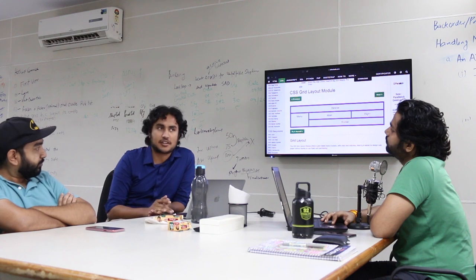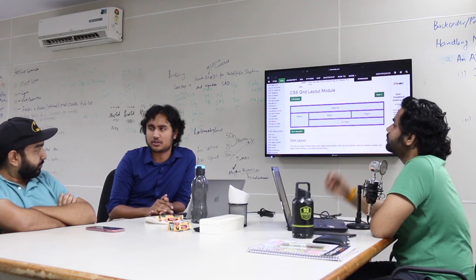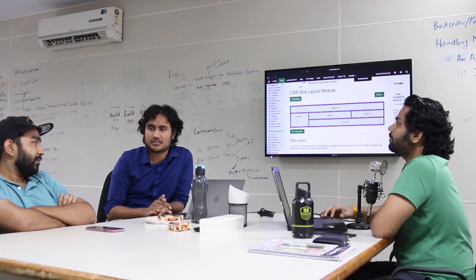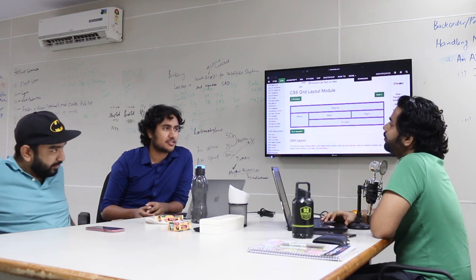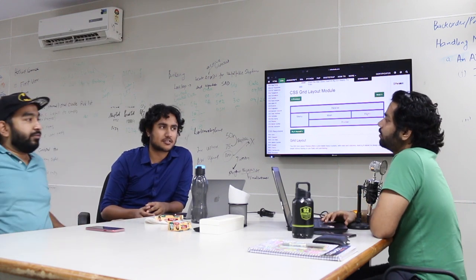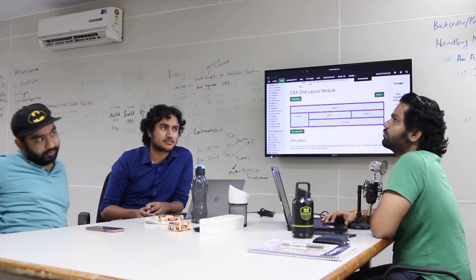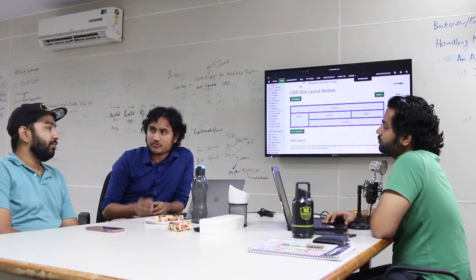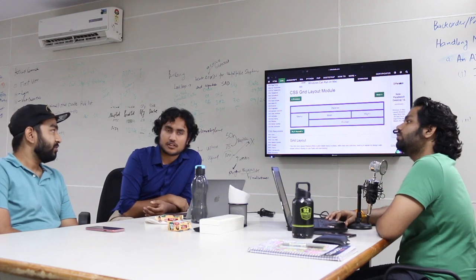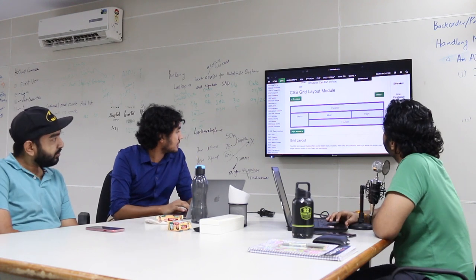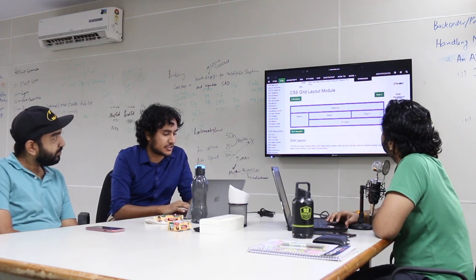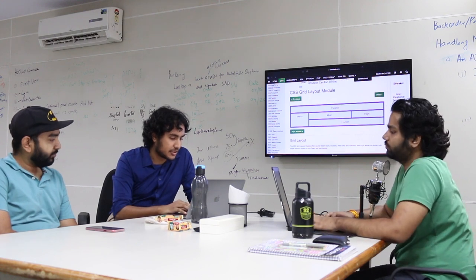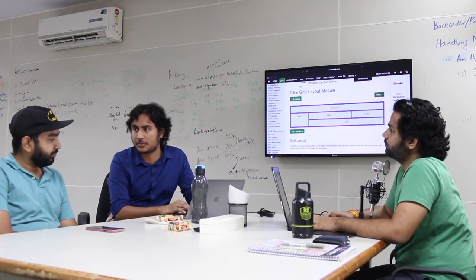Opinions aside, I don't think Bootstrap grid and CSS grid are the same thing underneath. Bootstrap's 12-column grid has been around for roughly 10 years, whereas CSS grid launched in October 2018 — so it's very new technology.